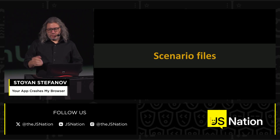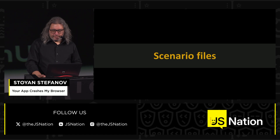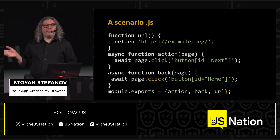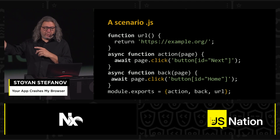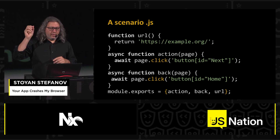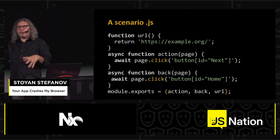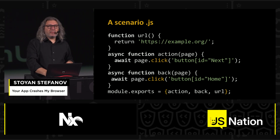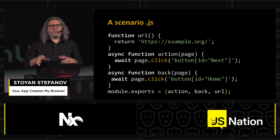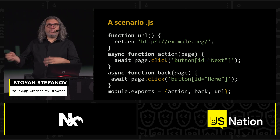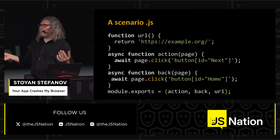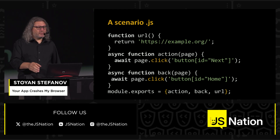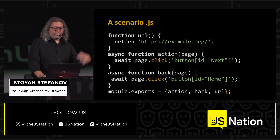MemLab uses so-called scenario files — just a JavaScript file. At the very minimum you implement three methods: one for where to go, one for what to click or interact with (anything Puppeteer allows), and one to come back. There are additional APIs for cookies and login state if the app is behind a login, but that's the bare minimum.